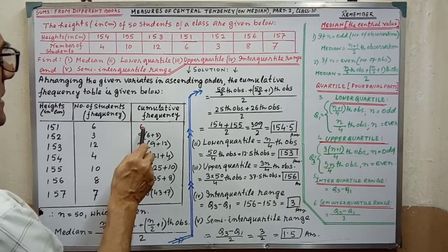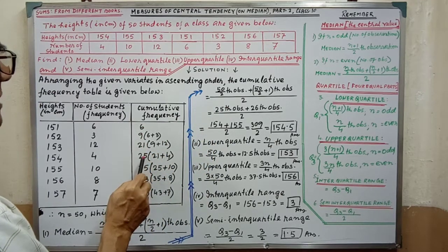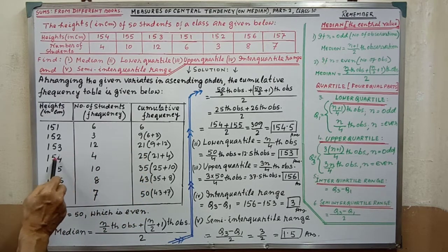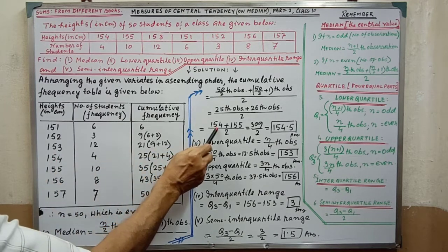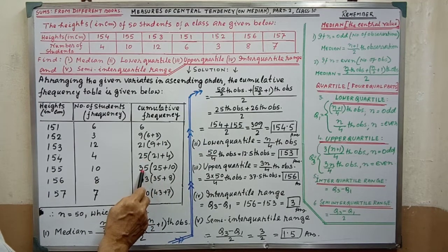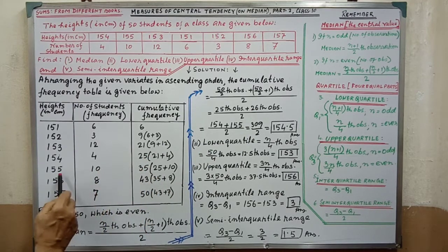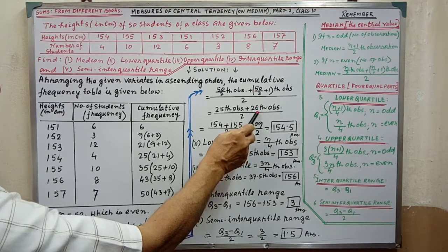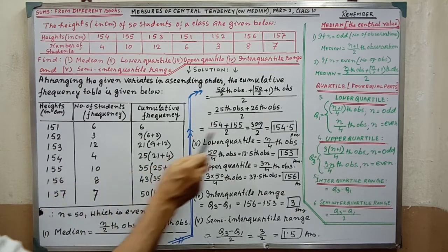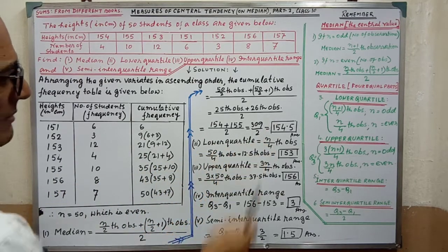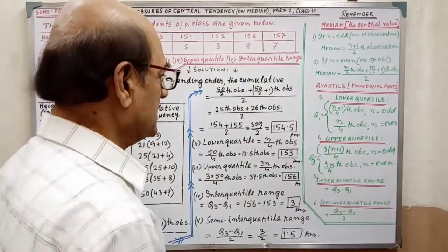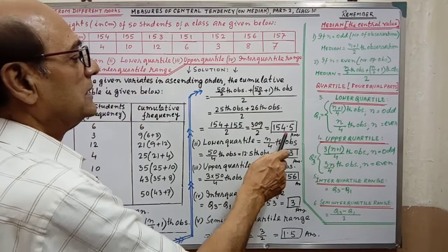The 25th observation falls in the cumulative frequency up to 21 — looking at the table, the 25th observation is 154. The 26th observation is 155. After writing these values and simplifying, we get (154 + 155) / 2 = 154.5. That is the median. This answer is complete.